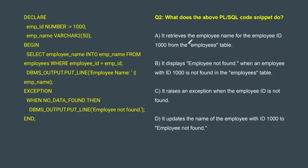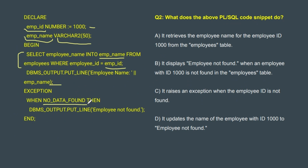Moving to the second question: What does the PL/SQL code snippet do? We declare 'employee_id NUMBER := 1000' — assigning 1000 to the employee_id variable. 'employee_name VARCHAR2(50)' — just initializing the employee_name variable. In the BEGIN block: 'SELECT employee_name INTO employee_name FROM employees WHERE employee_id = employee_id' — this selects the employee name and assigns it to the employee_name variable from the employees table where the ID matches 1000. DBMS_OUTPUT.PUT_LINE prints the name. In the EXCEPTION block, WHEN NO_DATA_FOUND — this is a type of exception. If ID 1000 doesn't exist in the employees table, this exception executes and 'Employee not found' is printed.